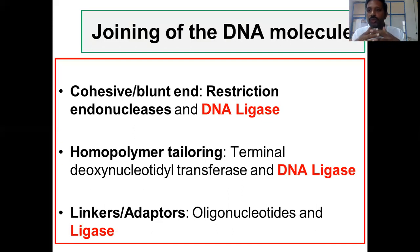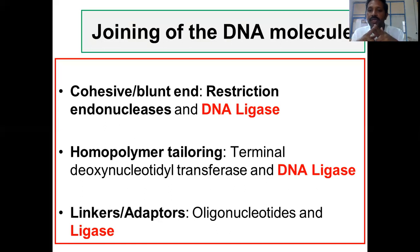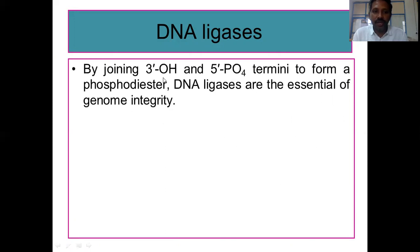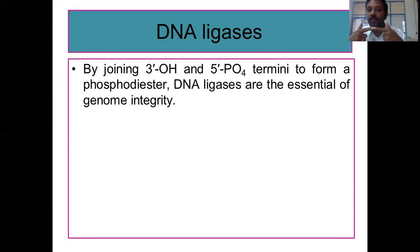In the process of joining DNA molecules — irrespective of whether they are produced through restriction endonuclease digestion, homopolymer tailing, or linkers and adapters — the two DNA molecules must be joined using the enzyme DNA ligase. Today's topic is DNA ligase. By joining the three prime OH and five prime phosphate termini to form a phosphodiester bond, DNA ligases are essential for genome integrity. They catalyze the formation of a phosphodiester bond between two adjacent nucleotides.